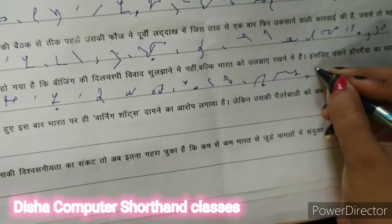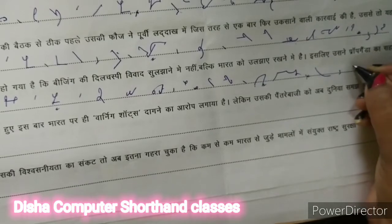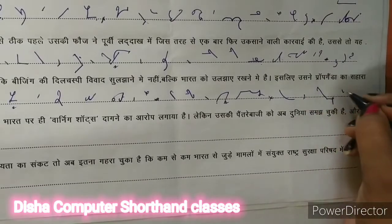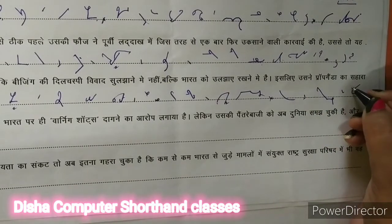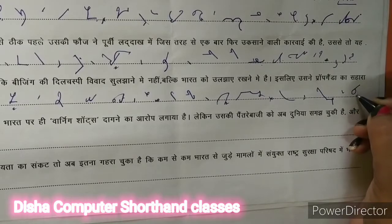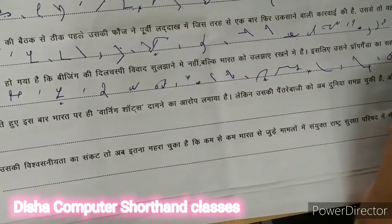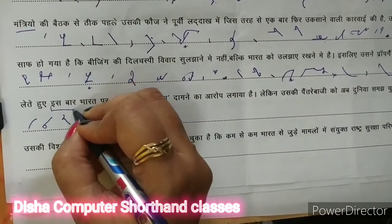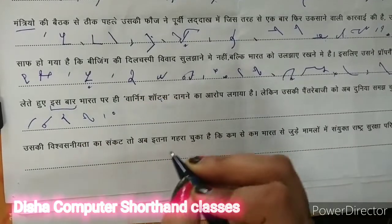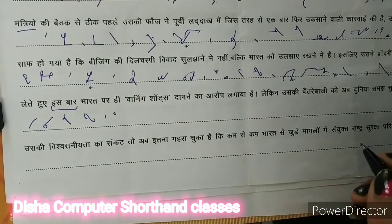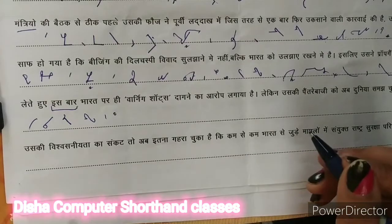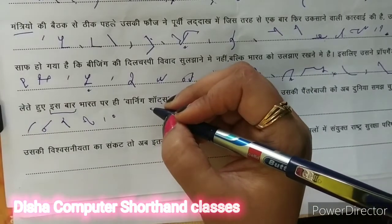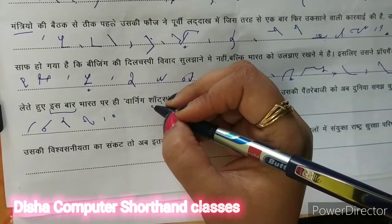पूर्ग्राम — इसलिए उसने प्रॉपगेंडा का सहारा — ये सा और हा ऐड हो गया — सहारा लेते हुए इस बार दोनों कमाइन करते हैं — भारत पर ही वर्निंग शॉट्स। तो यहाँ पर व की विंजिंग देखाय को बनाते हुए फिर इन शब्दों को बनाएंगे — तो कैसे लिखेंगे? देखिए: वर्निंग शॉट्स।